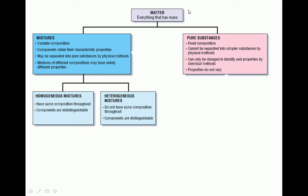To summarize: matter is everything that has mass and occupies space. Matter can be classified as mixtures or pure substances. Mixtures may have variable composition, their components are not chemically altered but physically mixed, and they can be separated by physical means such as filtration, sorting, or distillation. Mixtures are either homogeneous — same composition throughout, single phase — or heterogeneous, which do not have the same composition throughout and may have distinct different phases or distinguishable components.